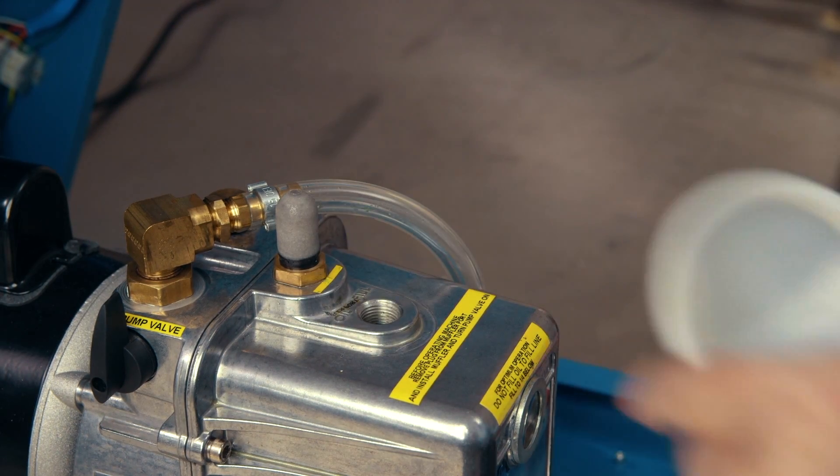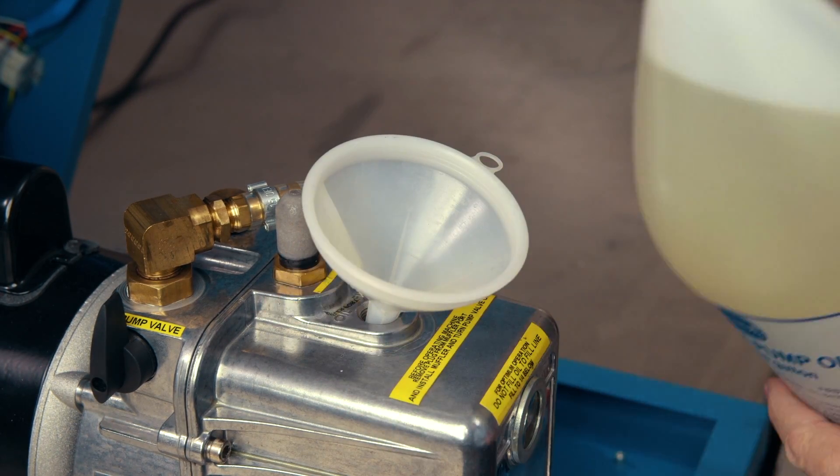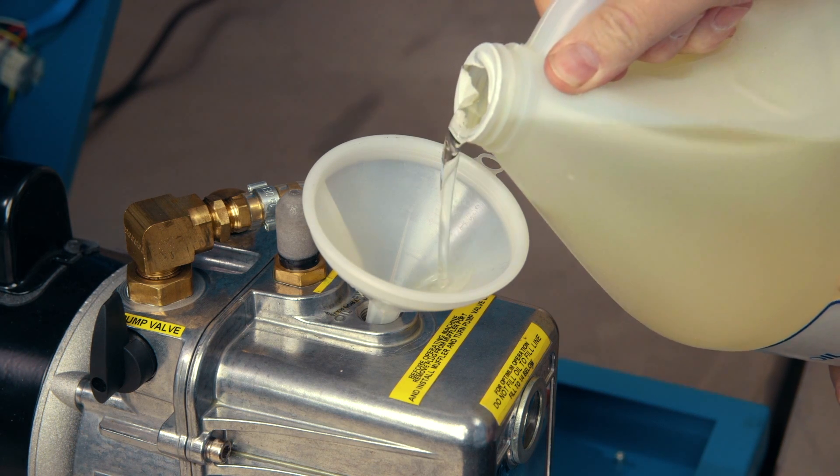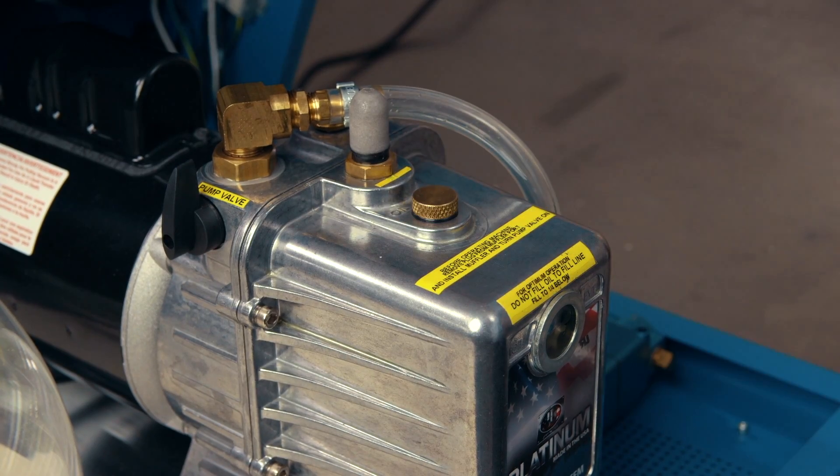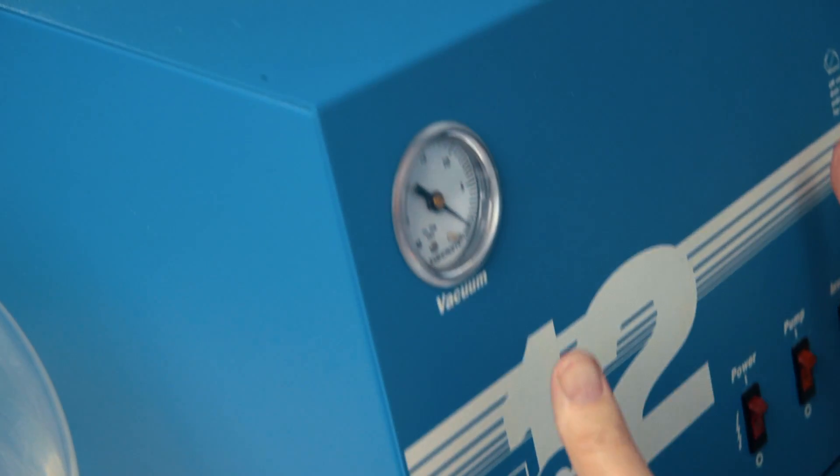Open the fill cap and refill the pump with fresh vacuum pump oil. Check that the oil reaches the fill line on the sight glass. Then close the cap securely and close the front of the machine.